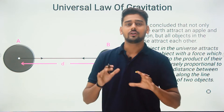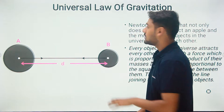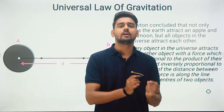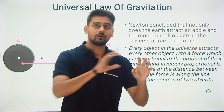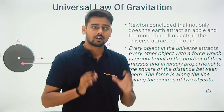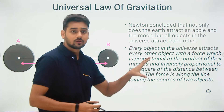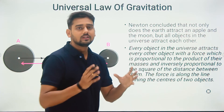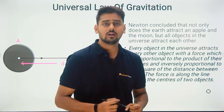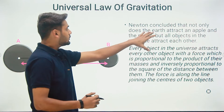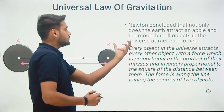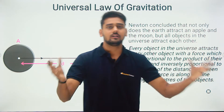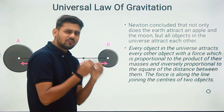Hello students, today we are going to learn about the universal law of gravitation. Up to this point we learned about different ideas about what gravity or the force of gravitation between any two objects can be. Right now we are going to understand this from the perspective of Isaac Newton. After all his studies, calculations, and crunching all the numbers, Newton concluded that not only does the Earth attract the apple or the moon, but actually all objects in this universe attract each other.